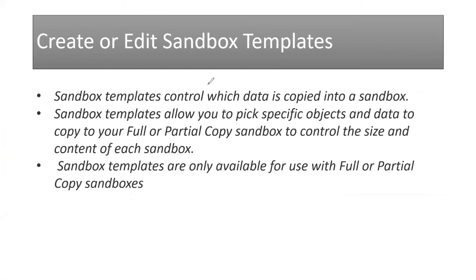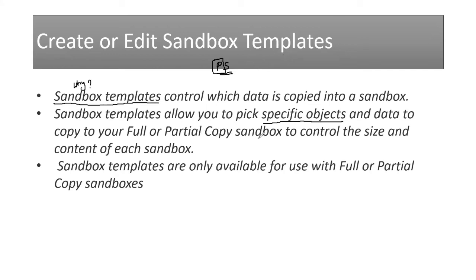Now let's understand what exactly a sandbox template is before we create a partial copy sandbox. A sandbox template controls which data is copied into a sandbox. We discussed that a partial copy sandbox means a partial set of data from production is copied. But how do I define which partial set I want? That's where a sandbox template comes in. It allows you to pick specific objects and data to be copied into your full or partial copy sandbox, to control the size and content.